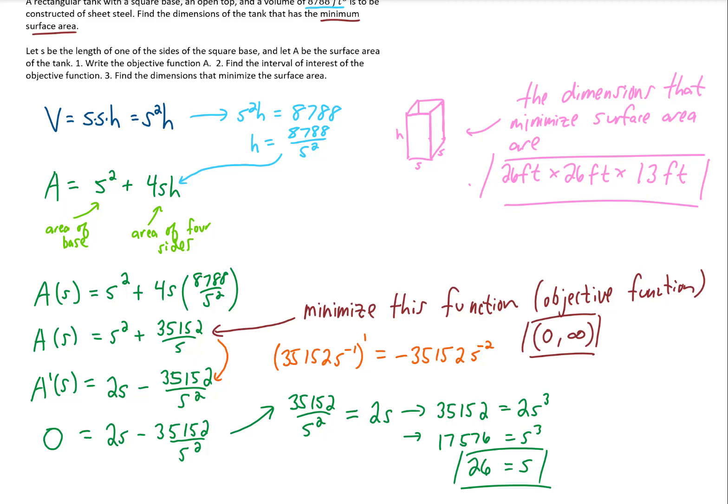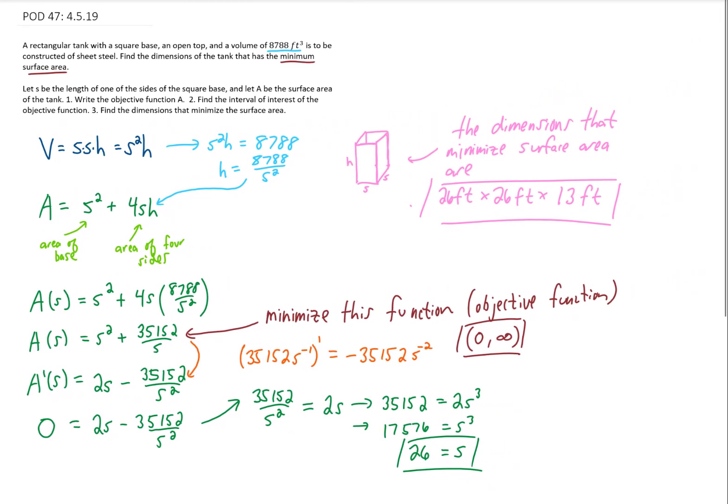And we should find that that second derivative evaluated at S equals 26 is positive. Therefore, the second derivative test says that we have here a minimum. So okay, I think that's all I'm going to say about that problem. I hope that this helps you out. In the next video, we're going to be talking about linear approximations. So I will see you there.